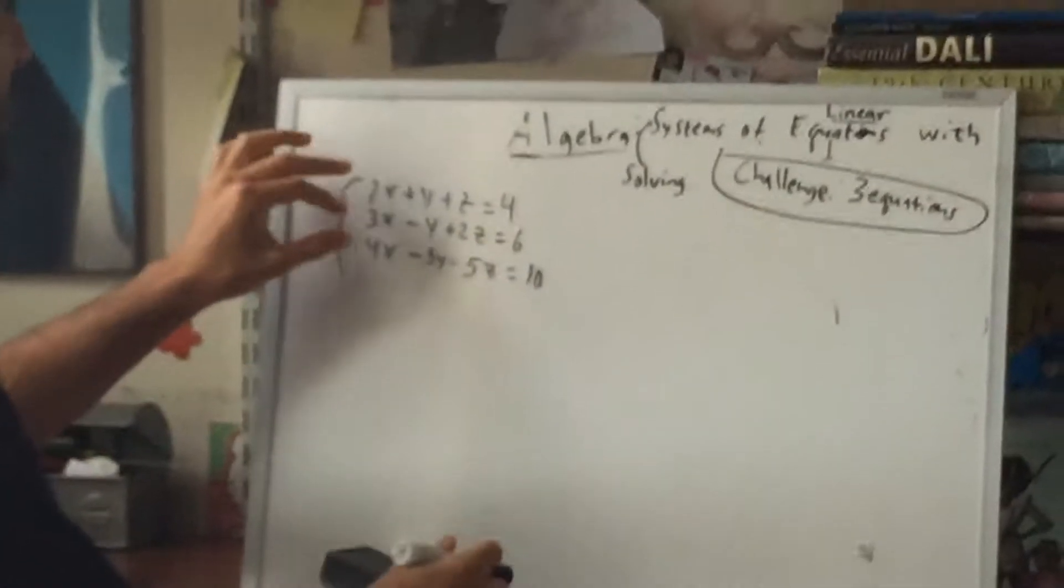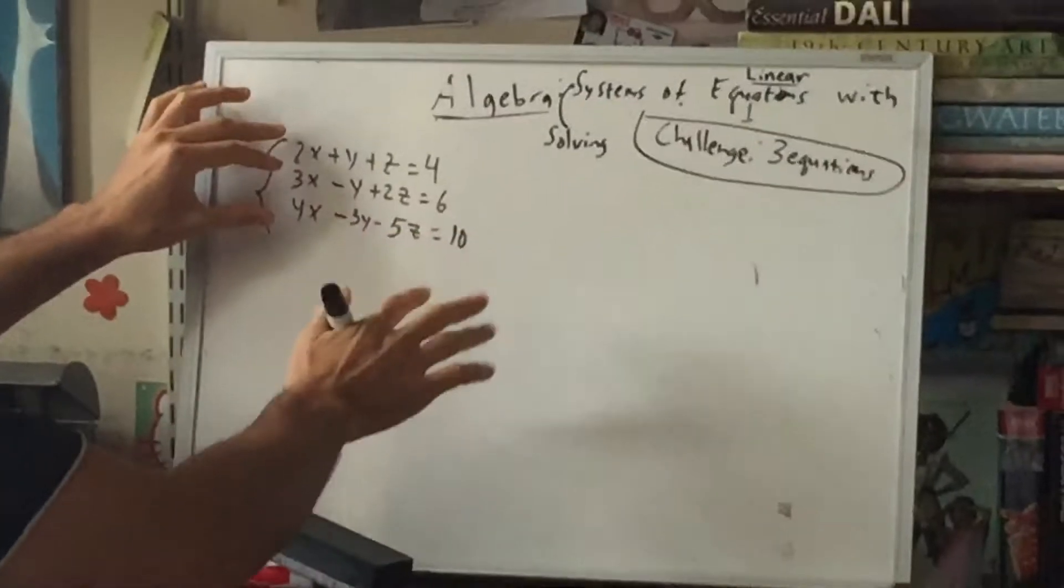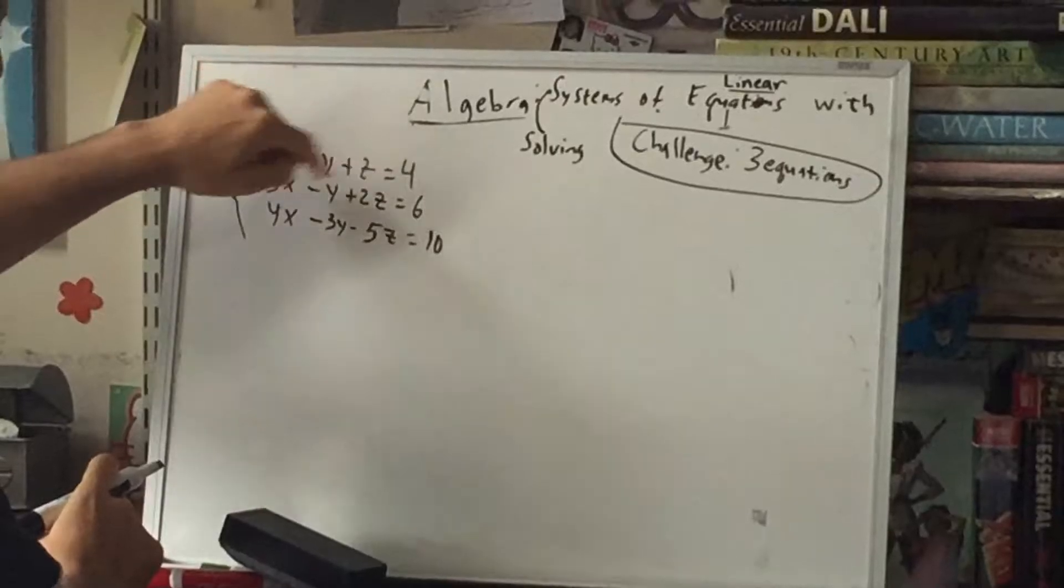You could even use the same technique to solve four equations, five equations, but it's going to get more and more tedious. So here's the idea. First of all, we have three equations. That's x, y's, and z's. So what does this look like visually?